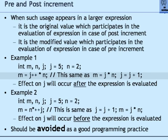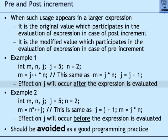Coming back to the expression M = J++ * N: the semantics say M = J * N, then J = J + 1. First, the current value of J is used to evaluate the expression, the result is assigned to M, and after that J is increased by 1. The effect of J's increment will occur after the expression is evaluated — that is why it is called post-increment.